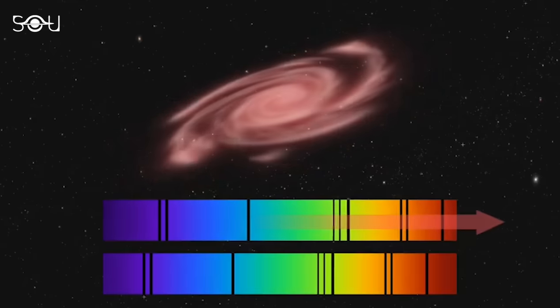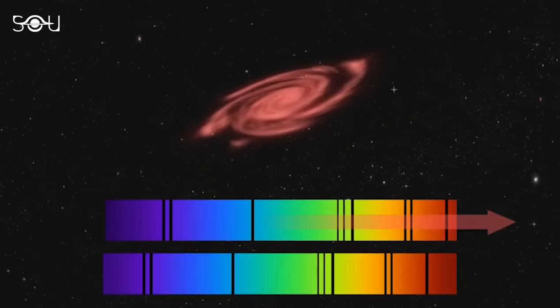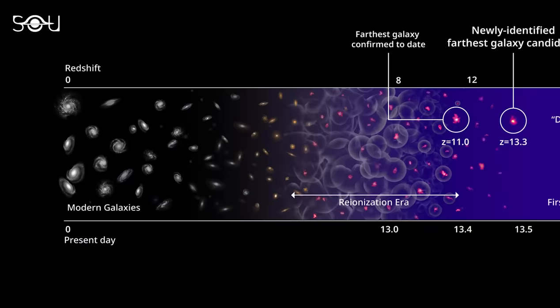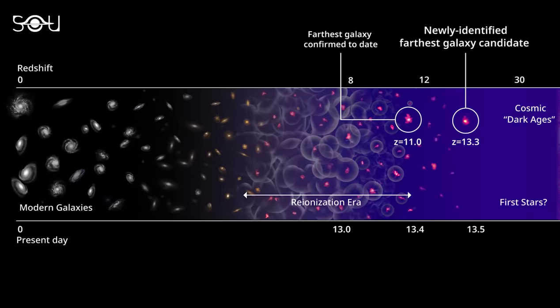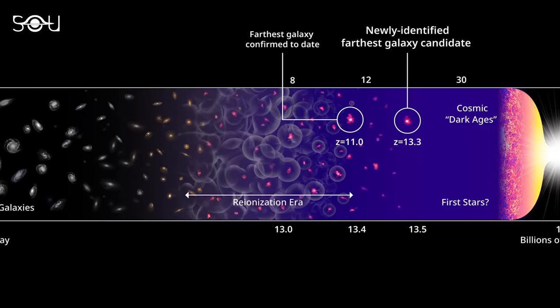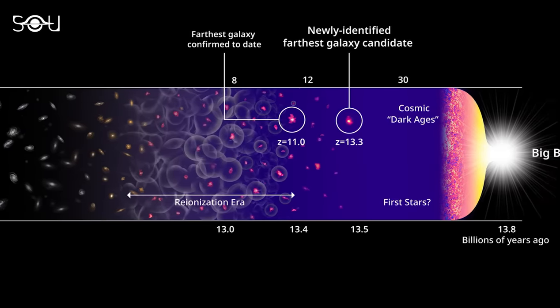Redshift helps us understand how far away objects in deep space are. We use a value called Z to represent redshift. When Z equals zero, it means it's happening now. As Z gets bigger, the farther back in time an object is, and the farther away it is from us.